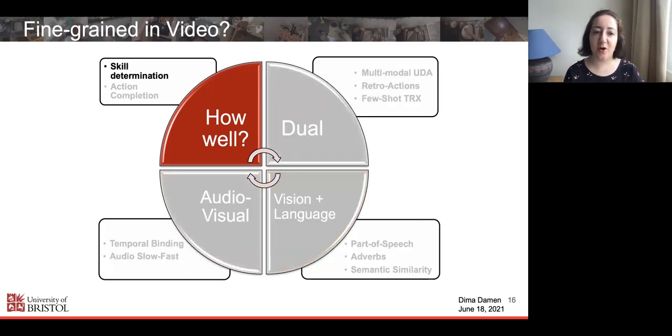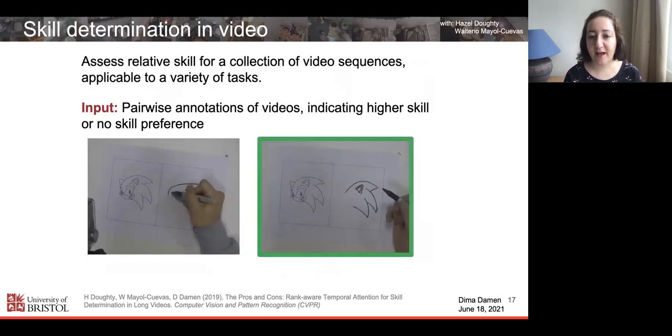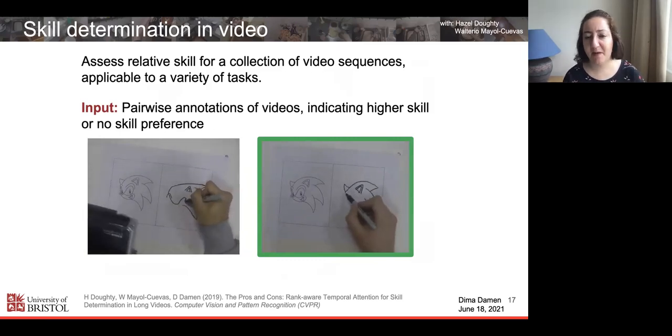Let's start with the work on skill determination from video. We're looking at a task where we want to assess the relative skill for a collection of video sequences of a certain task, say people drawing. It's easy to achieve annotations by giving people two videos on Amazon Mechanical Turk, and asking them to label which video exhibits a higher level of skill. People will disagree why they think the right side is better than the left side. Maybe it is the emotion of the sonic, how the eyes are drawn, or maybe how smooth the lines are, but they will all agree that the right side is exhibiting higher skill.